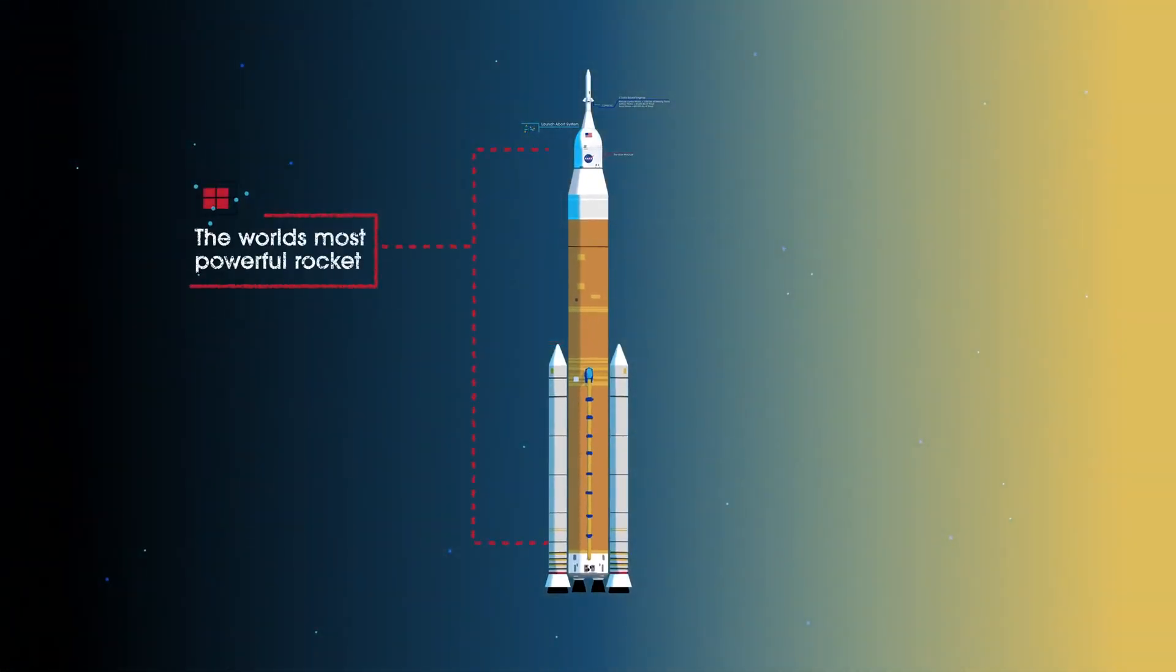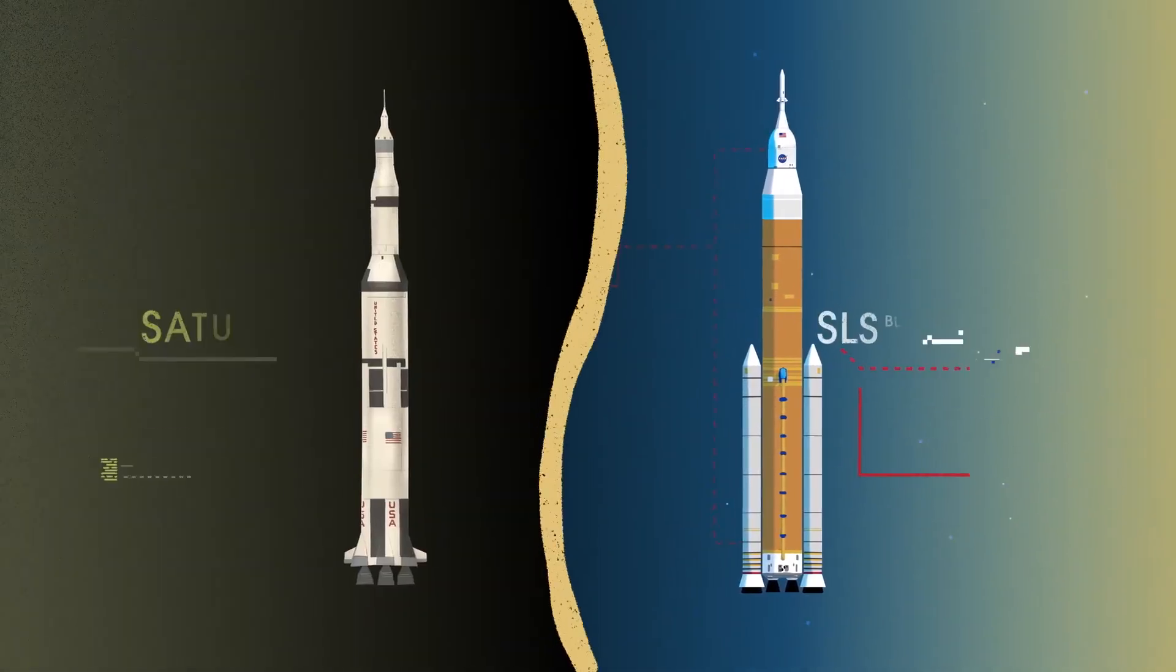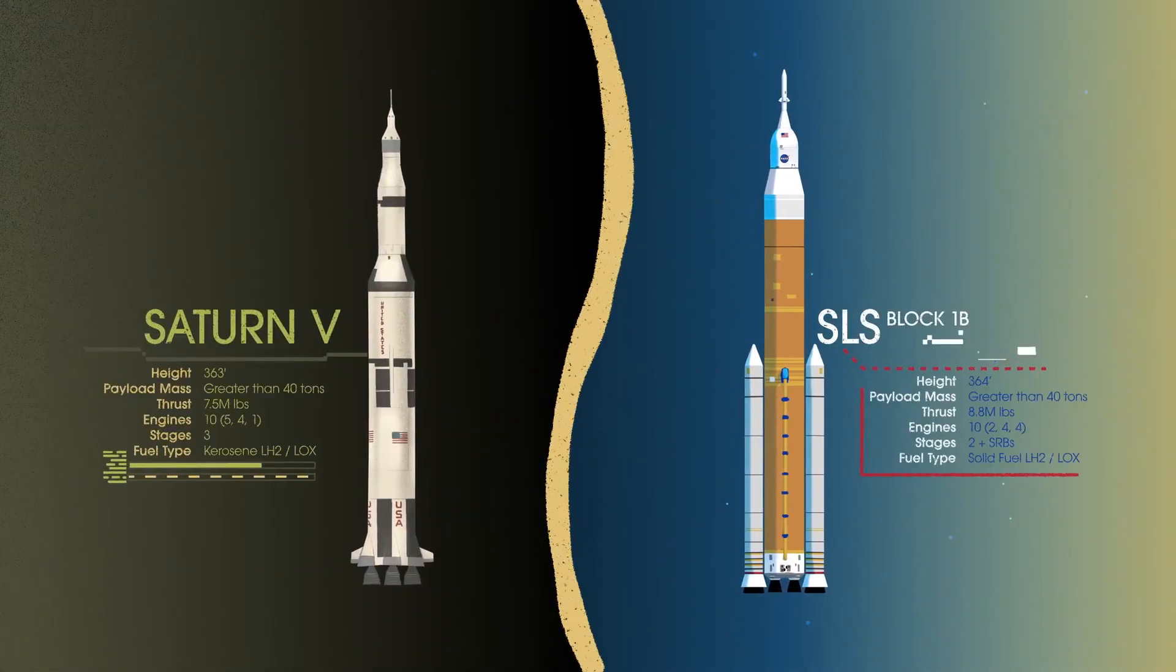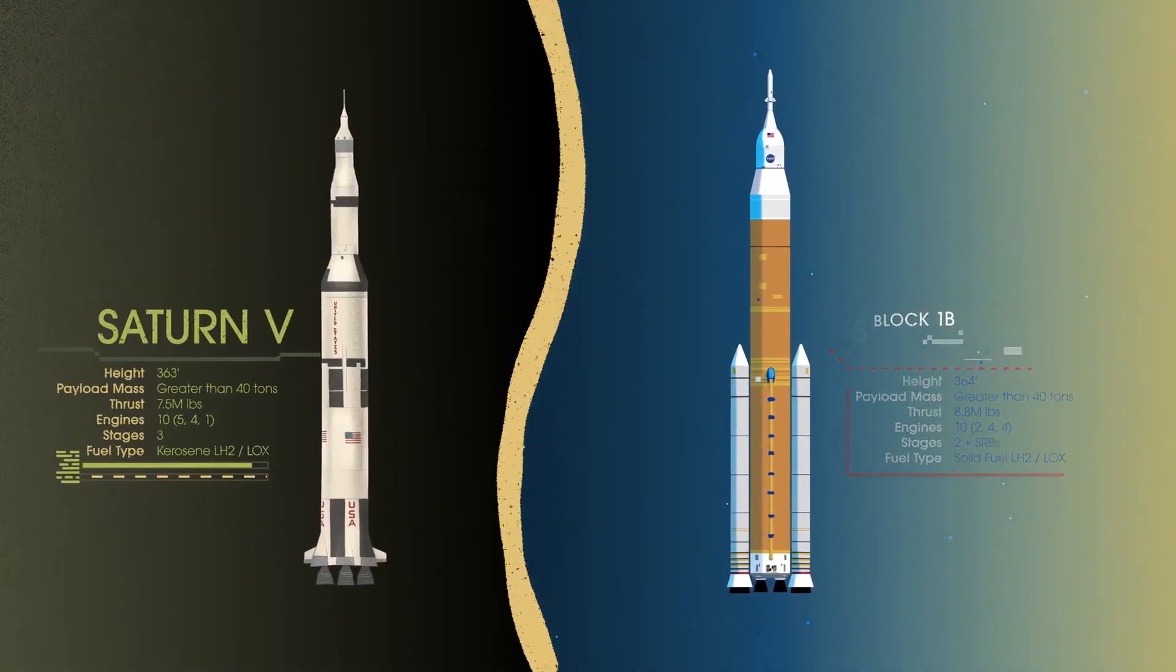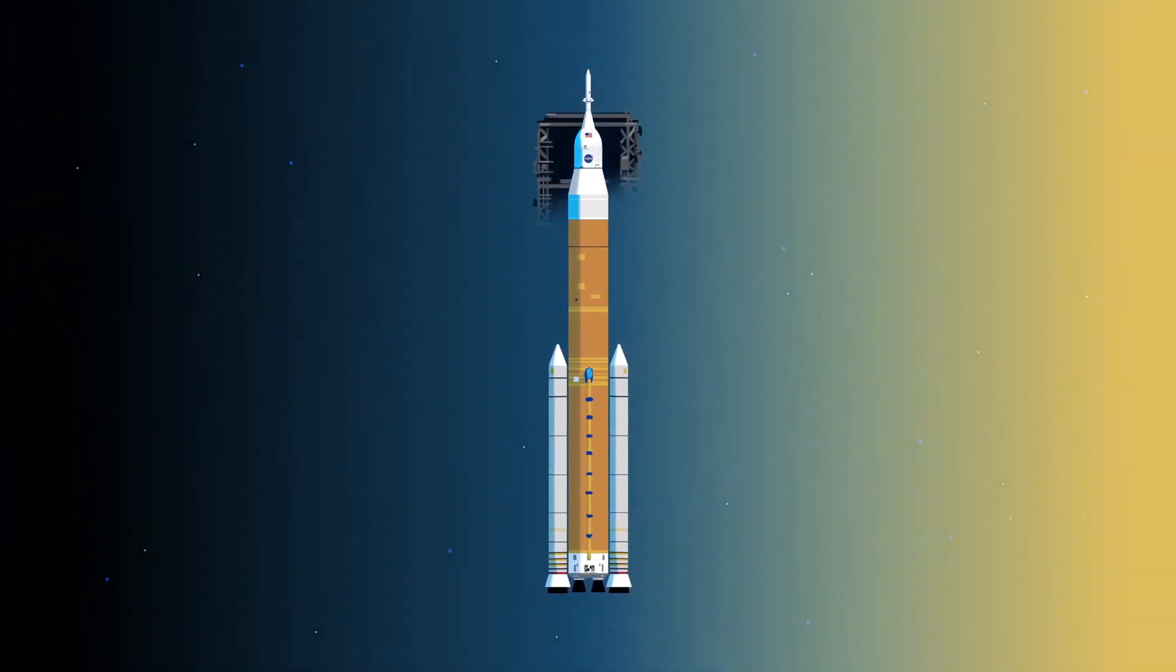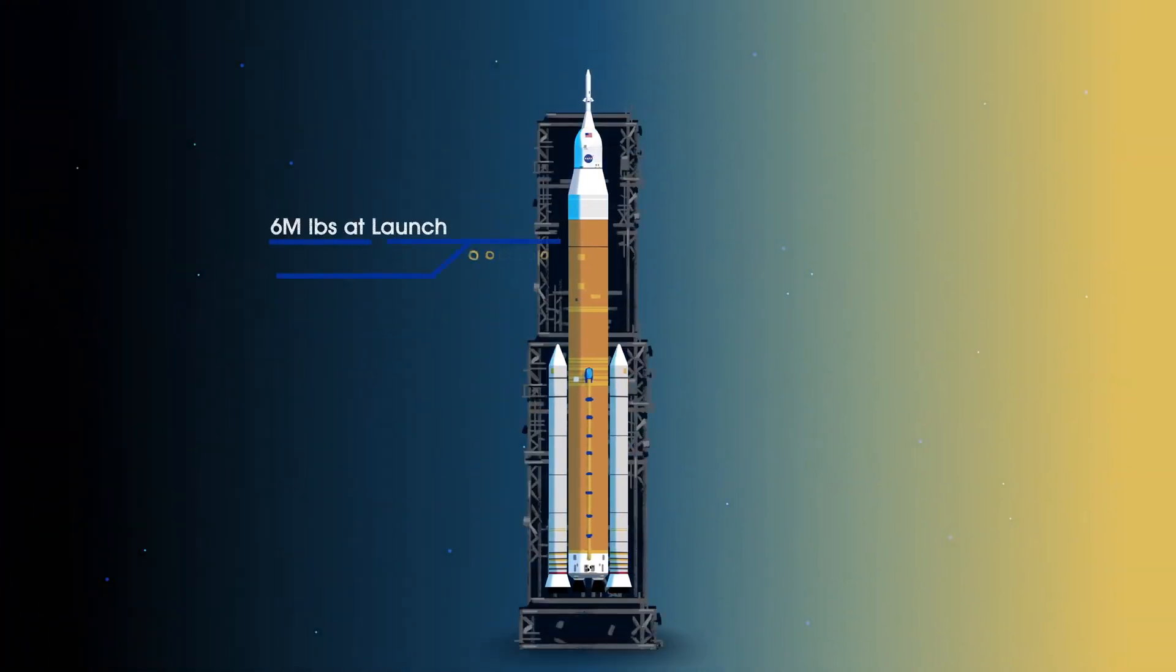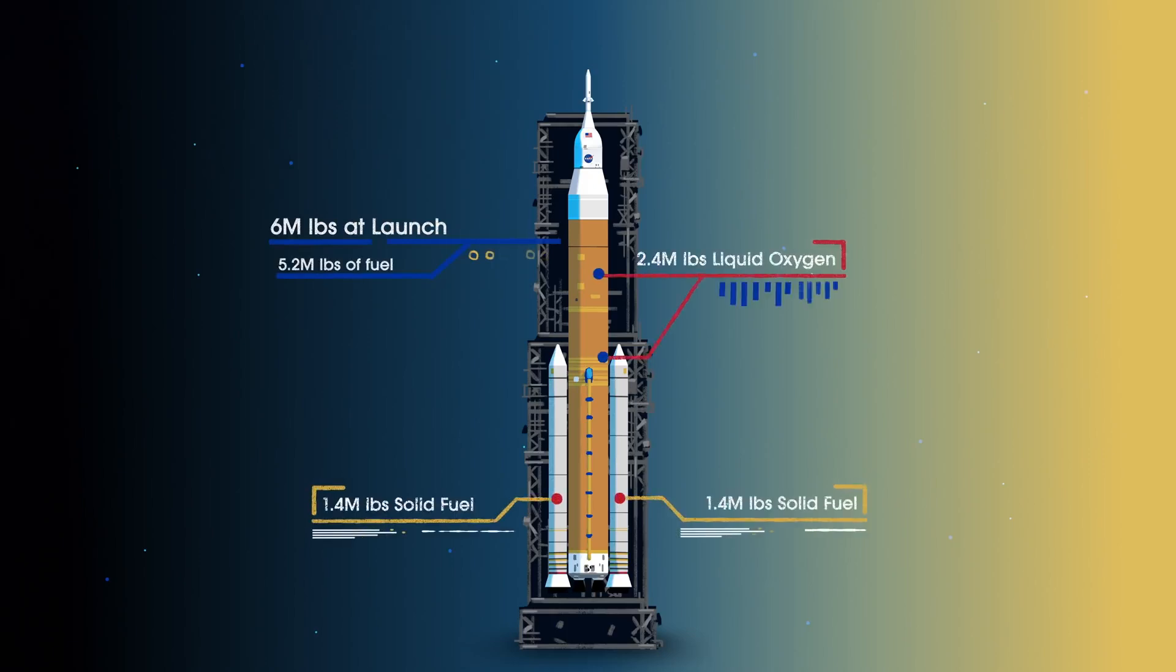Altogether, this is the world's most powerful rocket, and it exceeds the legendary Saturn V of the Apollo era in numerous ways. Sitting on the launch pad, the entire rocket, fully fueled, weighs just over 6 million pounds, 5.2 million of which is just the fuel.